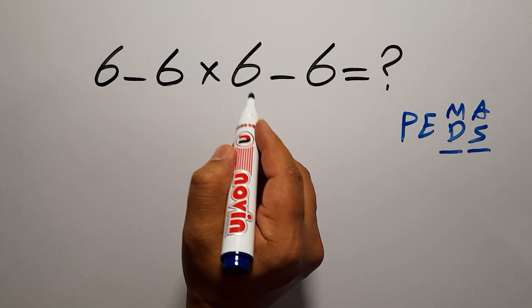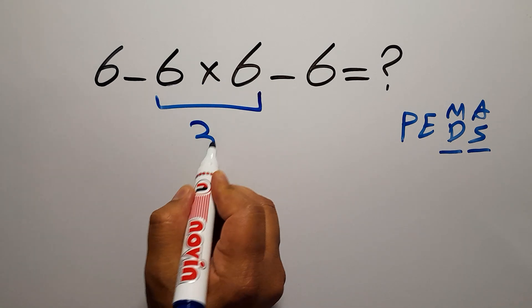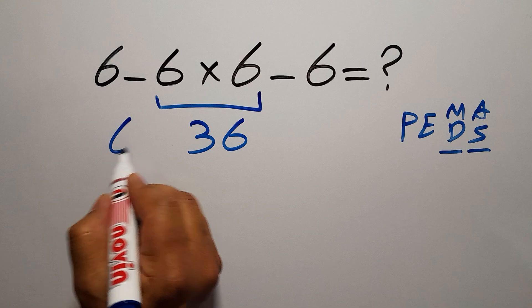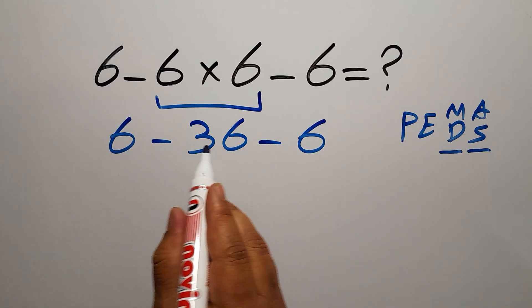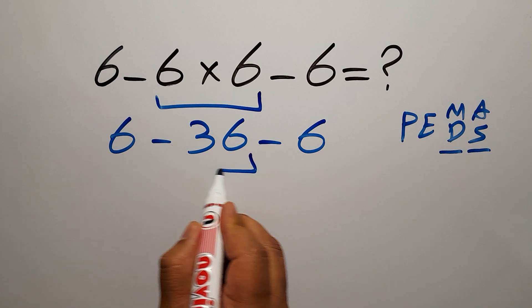6 times 6 gives us 36, so we have 6 minus 36 minus 6. Now 6 minus 36 gives us negative 30.